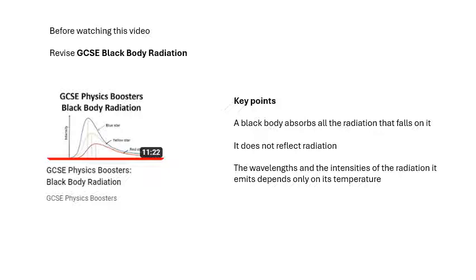Pretty basic stuff. The key points are: a black body absorbs all the radiation that falls on it, and then to stay in thermal equilibrium it will re-emit it, but not necessarily at the same wavelength. So a black body doesn't reflect radiation, it absorbs it and then it re-emits it.